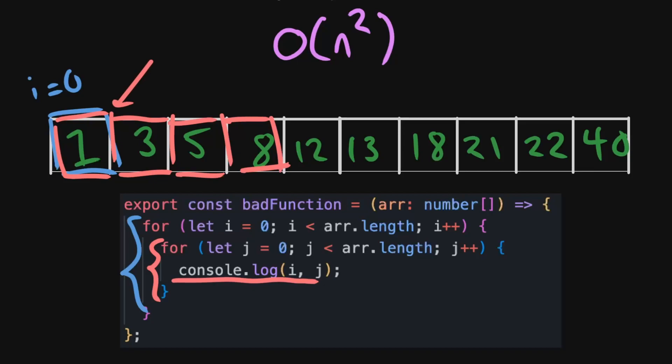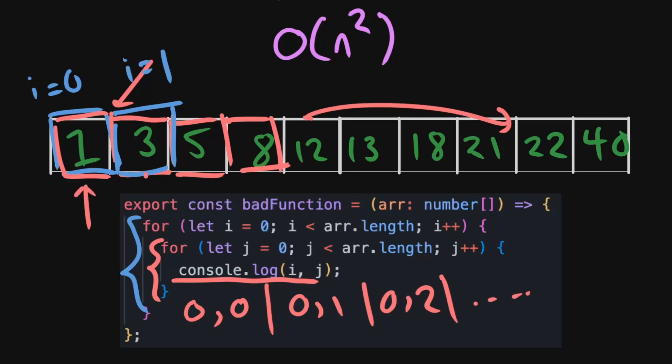So what we'll be console logging here would be zero zero, zero one, zero two, and so on. And then once we go all the way through with the J's, we start back with the i's and then i will be equal to one. And once again, J equals zero, J equals one, J equals two all the way. So we have one zero, one one, one two, and so on.